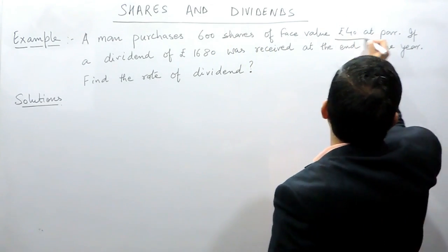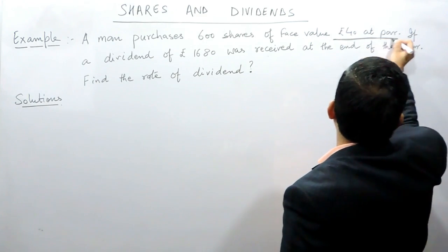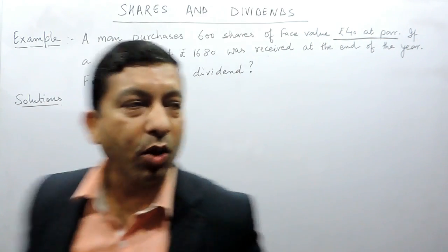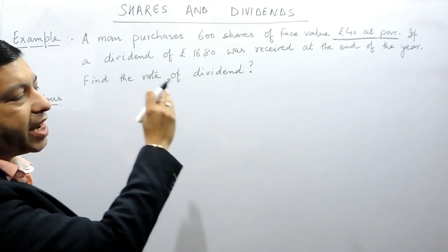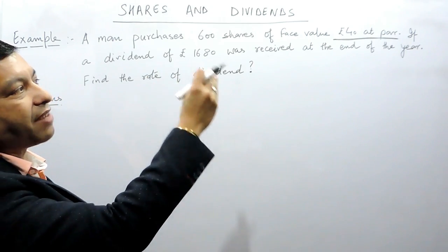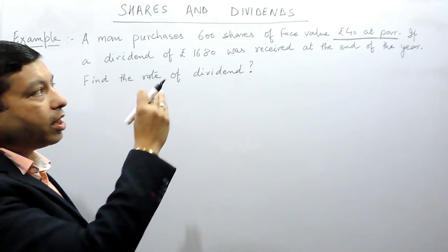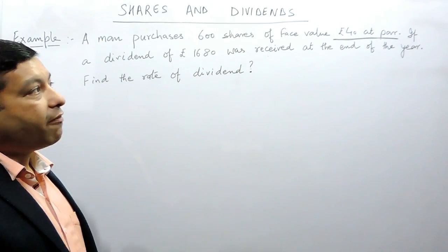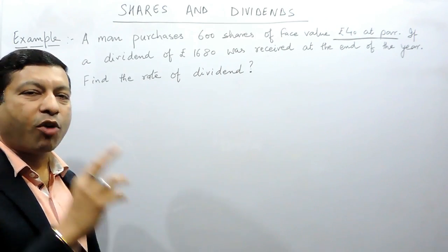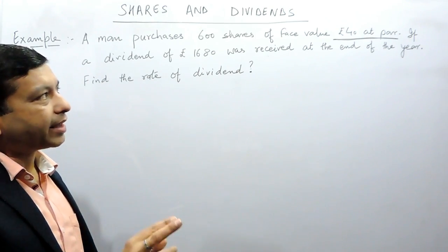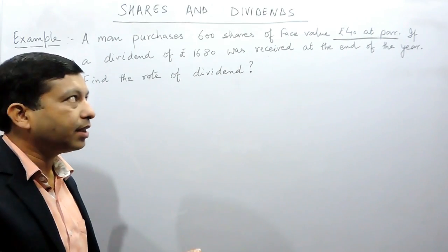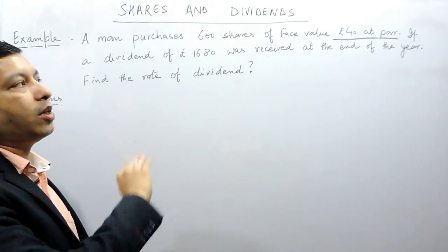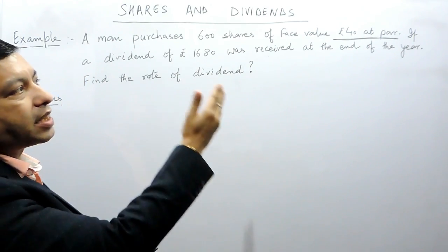This is a very important phrase. We can also write it as face value rupees 40 at 5 discount or face value rupees 40 at 10 premium. When I am saying at par, that means a share of rupees 40 is purchased at rupees 40 only, and there is no premium and no discount.